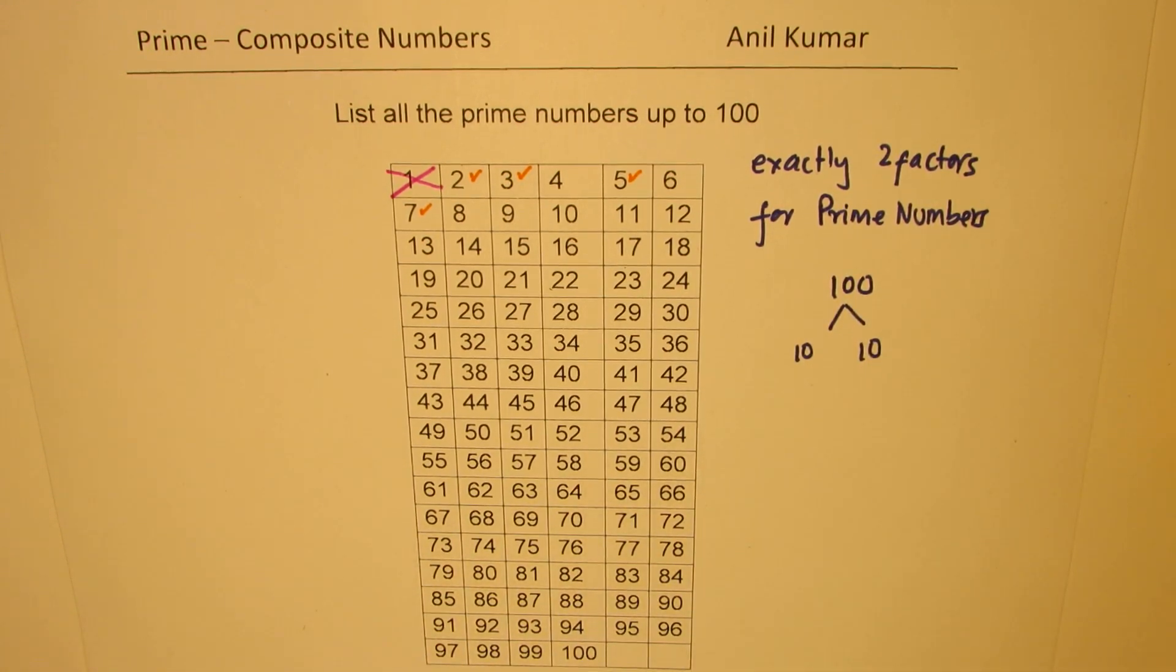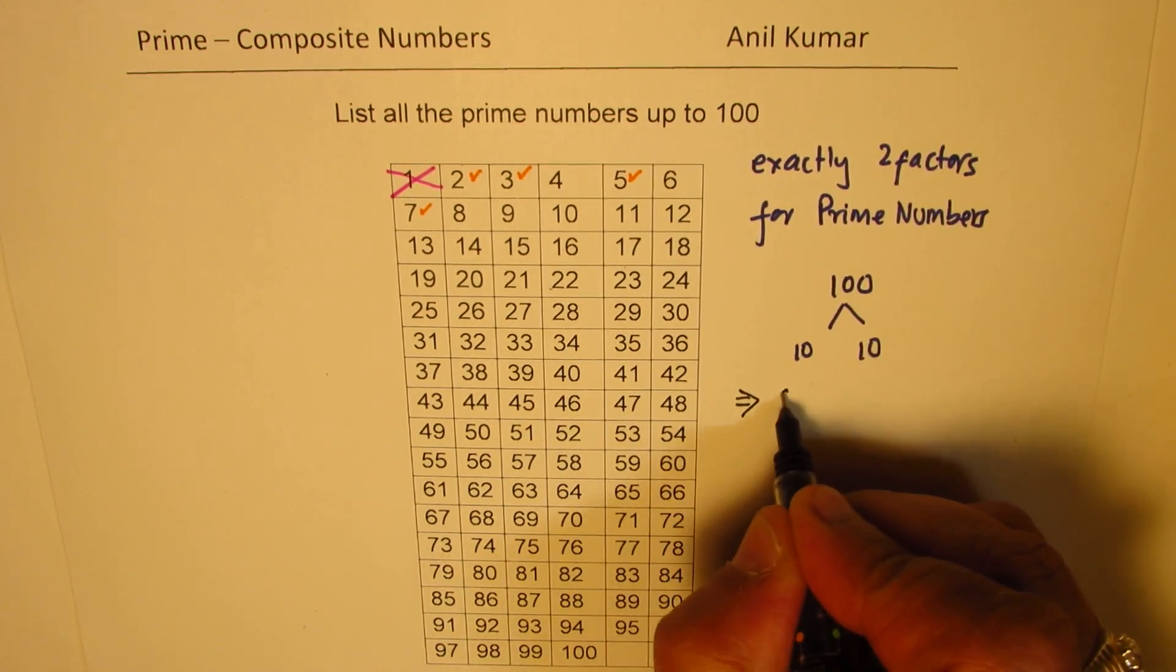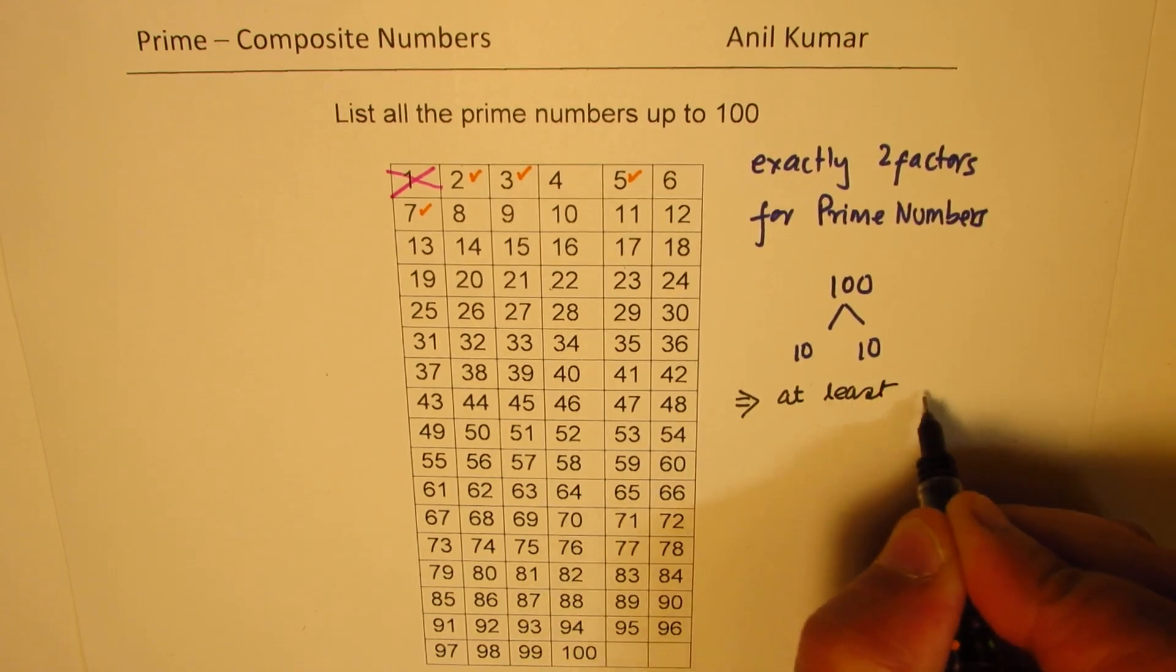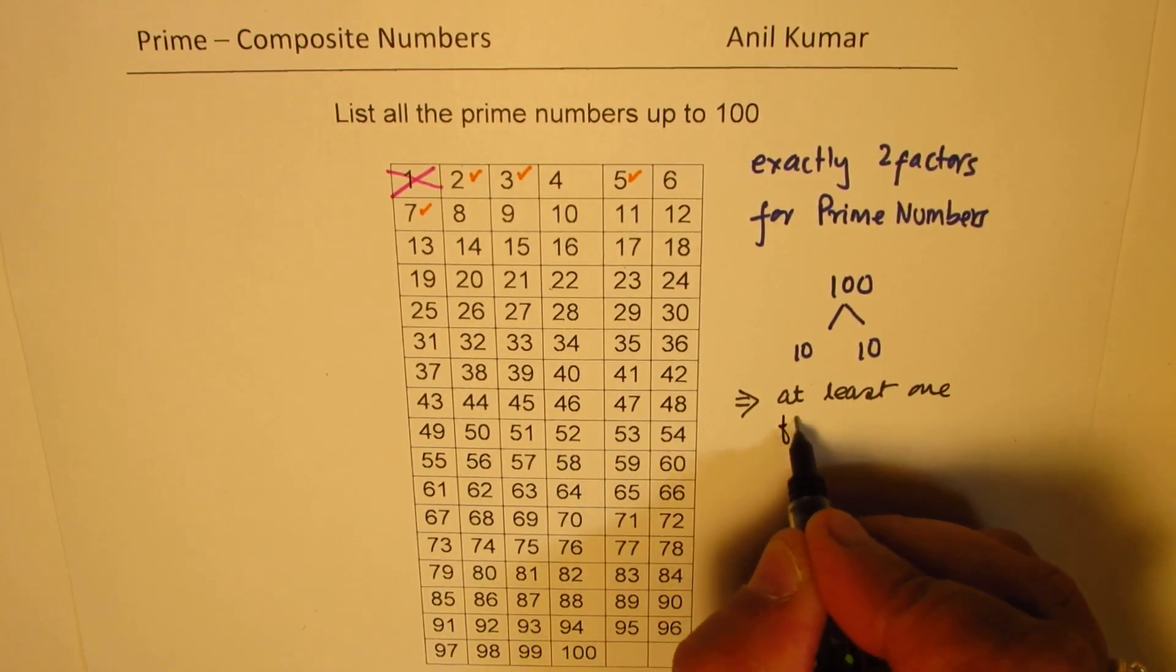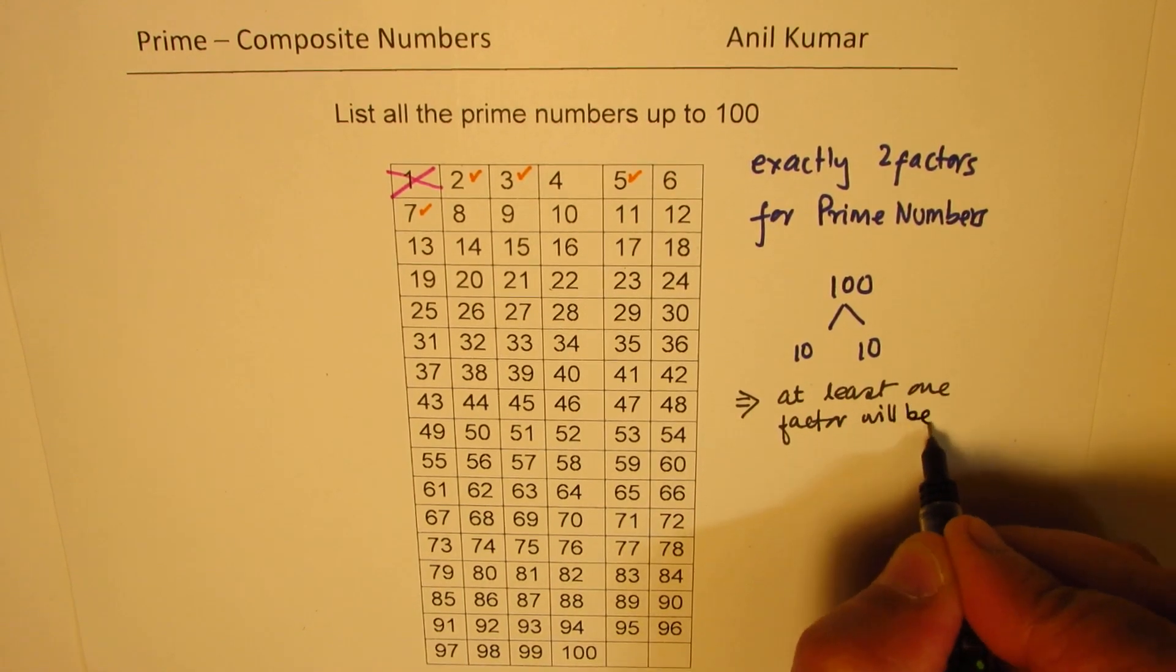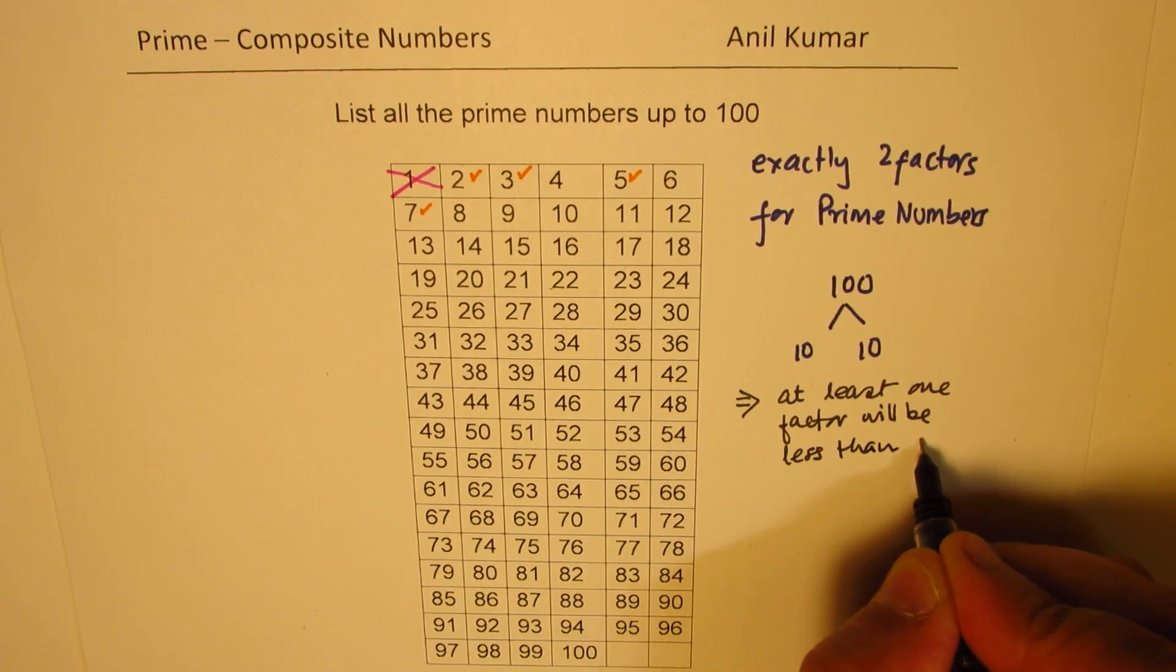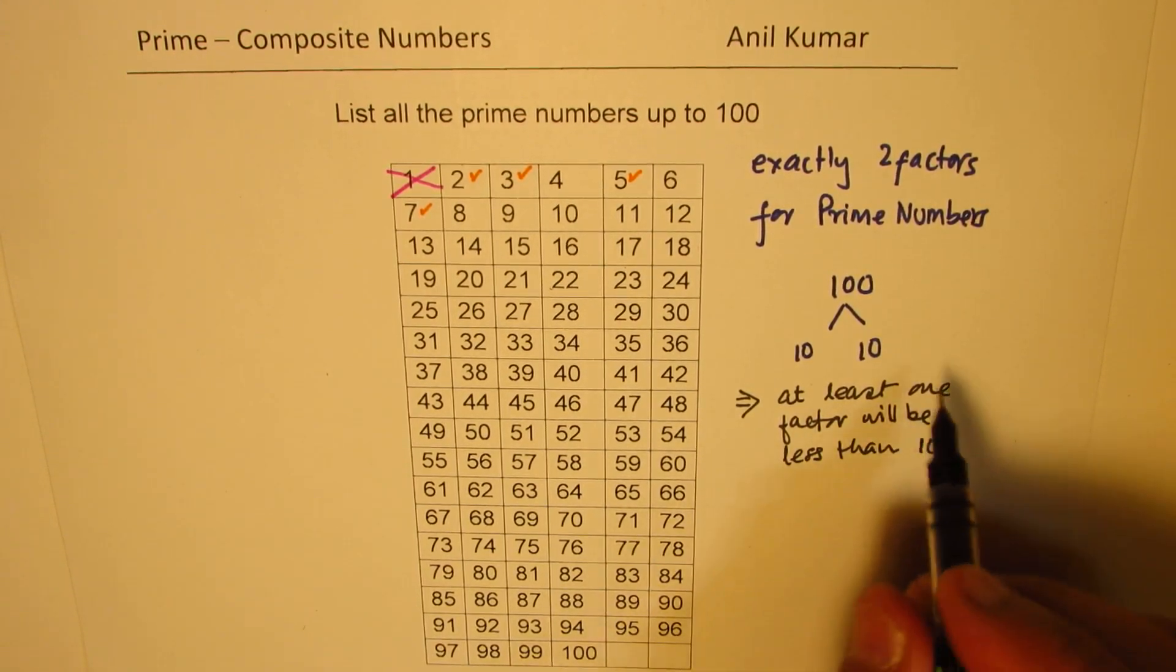So if you are looking for numbers less than 100, we know that at least one factor will be less than 10. So that implies that at least one factor will be less than 10.